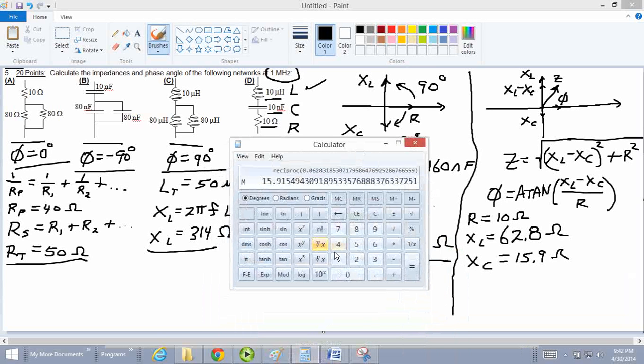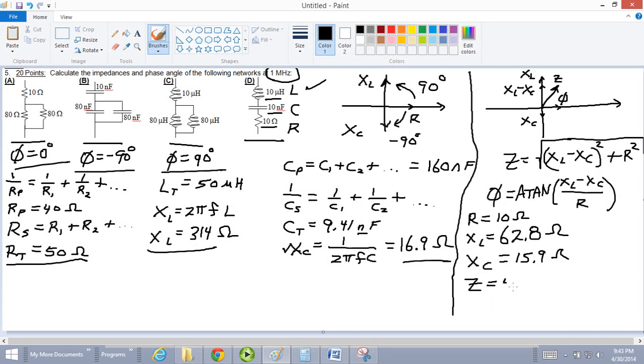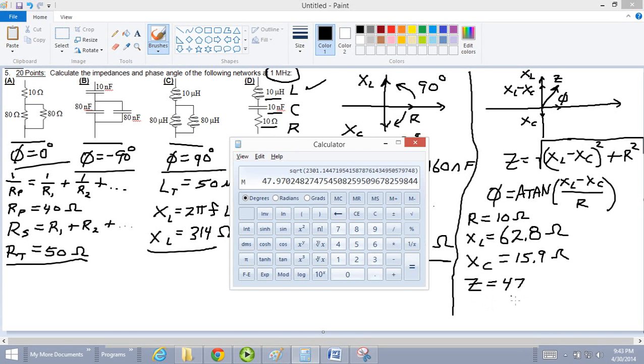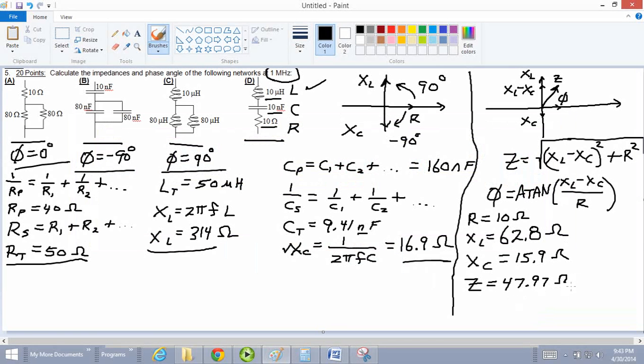This is XC in the calculator now minus memory recall. So I'm taking this minus this, and that's okay. Equals, okay. Now, XL minus XC is a positive. So I'm going to change the sign. I'm going to store this in memory. I'm going to need it twice. So go ahead and store this in memory. So square it, add it to R squared, which is 10, square that, equals, and take the square root. And that will give me Z. 47.97 ohms. 48 point ohms, or is that correct? Yeah.